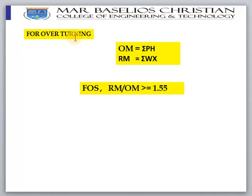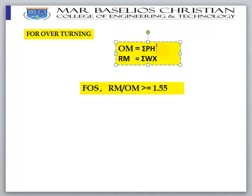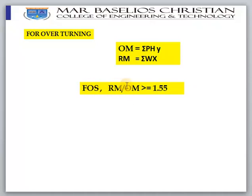For overturning stability, the overturning moment can be written as Σph × y (sum of horizontal forces times their heights), and the restoring moment as Σw × x. The factor of safety — restoring moment divided by overturning moment — must be greater than or equal to 1.55.